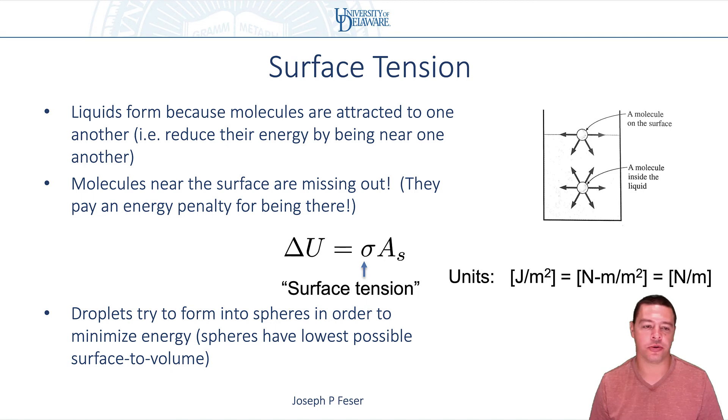So in general, liquids try to reduce their total energy by minimizing their potential energy by balling up. So if you, especially if you have small amounts of fluid, they will ball up into droplets to try to minimize the amount of energy, since spheres have the lowest possible surface to volume ratio.